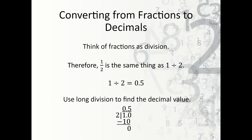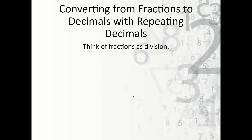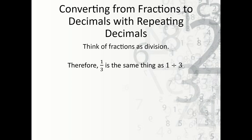Now how do we convert from fractions to decimals with repeating decimals? Again, think of fractions as division — so therefore one third is the same thing as one divided by three. When I put it into my calculator, I get 0.3 repeating.